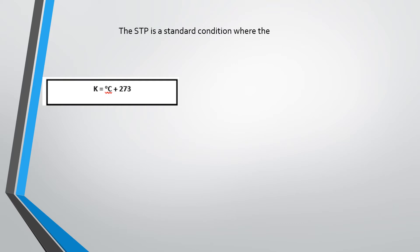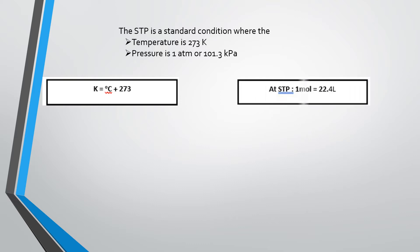In chemistry, certain standard units are used to calculate variables. When calculating any variable using temperature we will always measure temperature in Kelvin. The conversion is: Kelvin equals degrees Celsius plus 273. So whenever you have to convert degrees Celsius to Kelvin you just add 273. There is also a condition known as STP — standard temperature and pressure — where the temperature is 273 Kelvin and the pressure is 1 atmosphere or 101.3 kilopascal. When these two conditions are present we say the condition is known as STP.